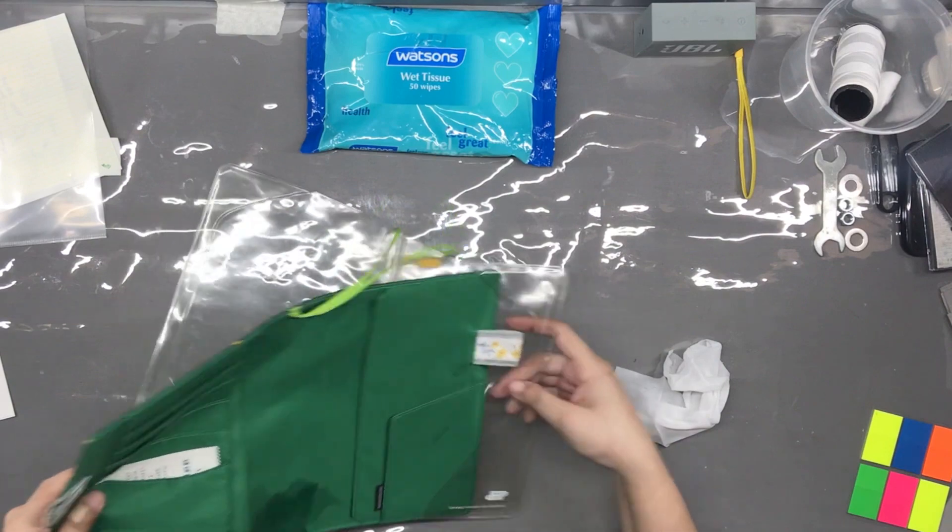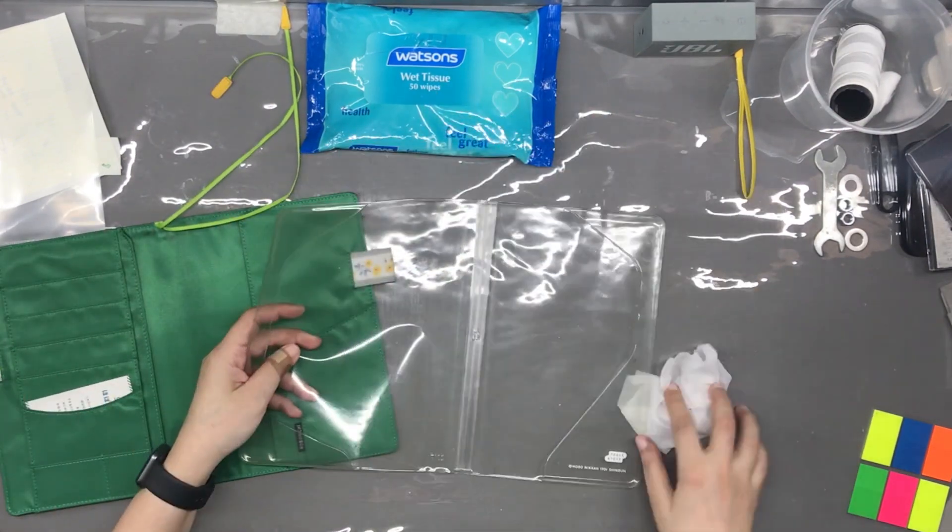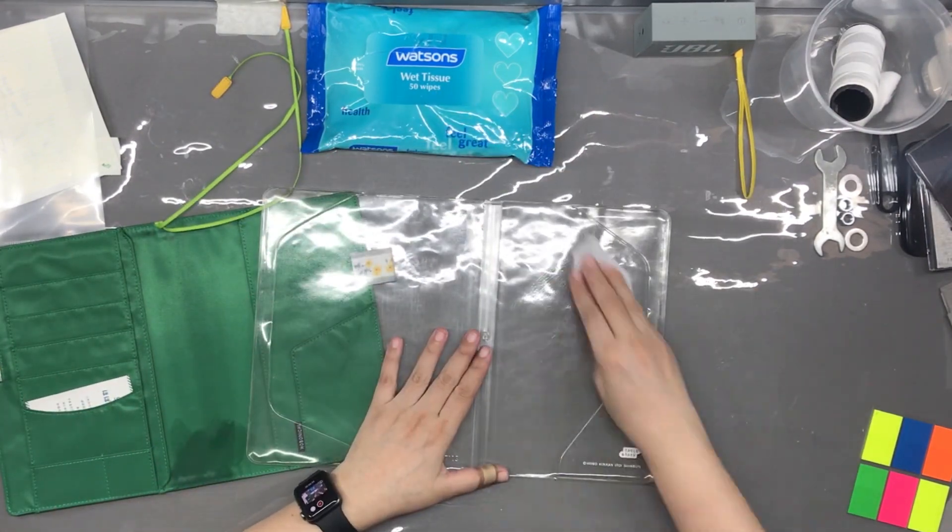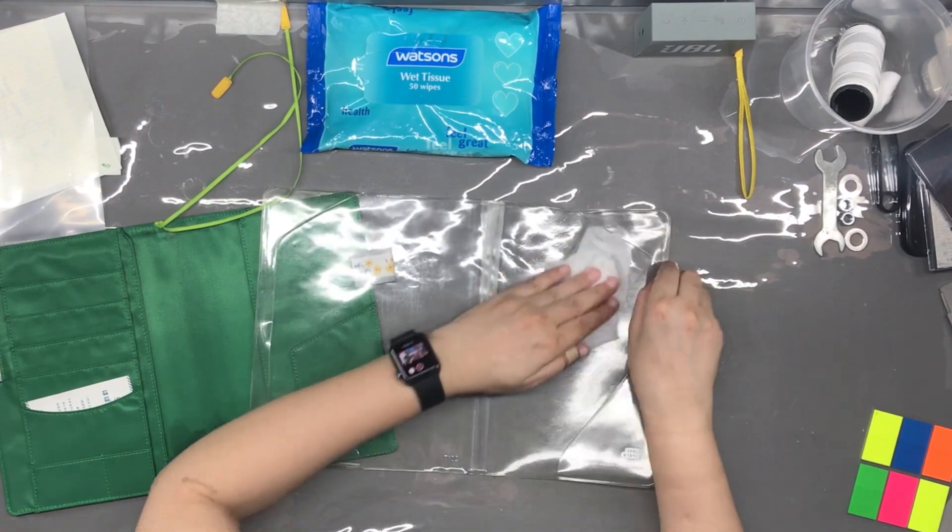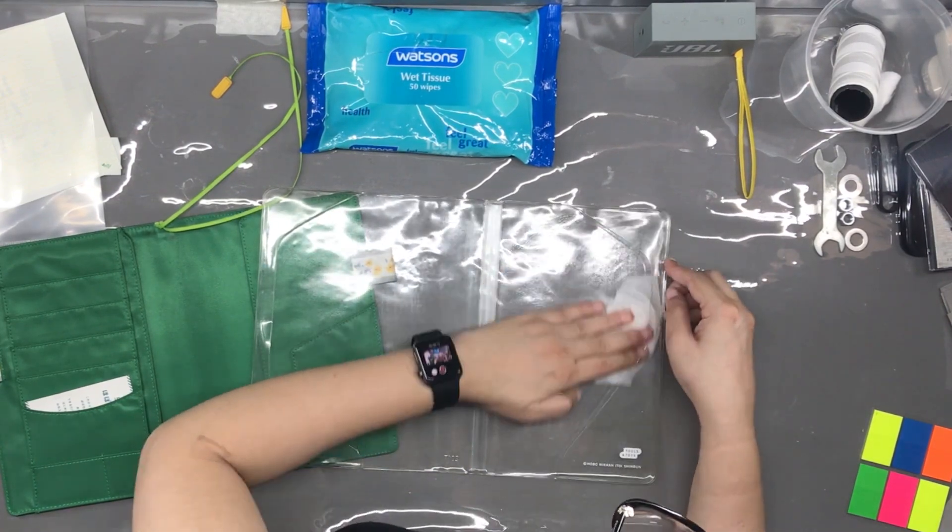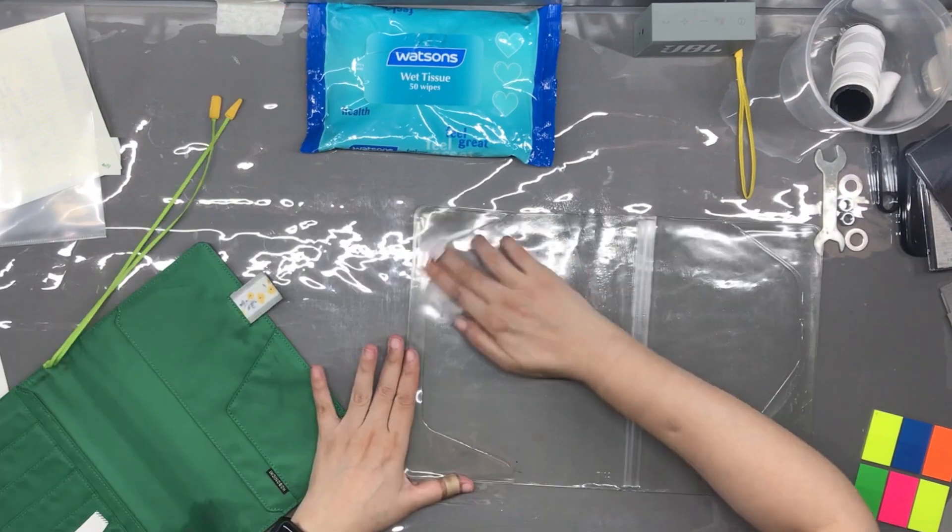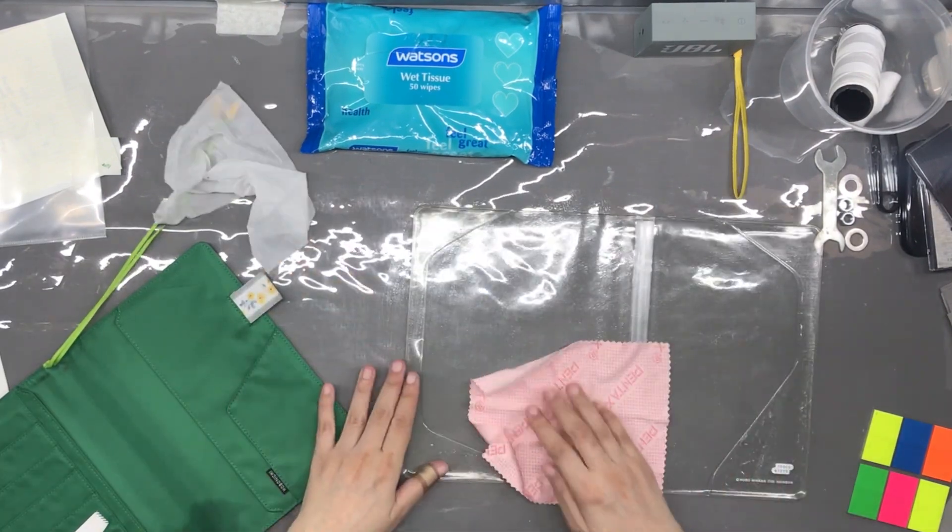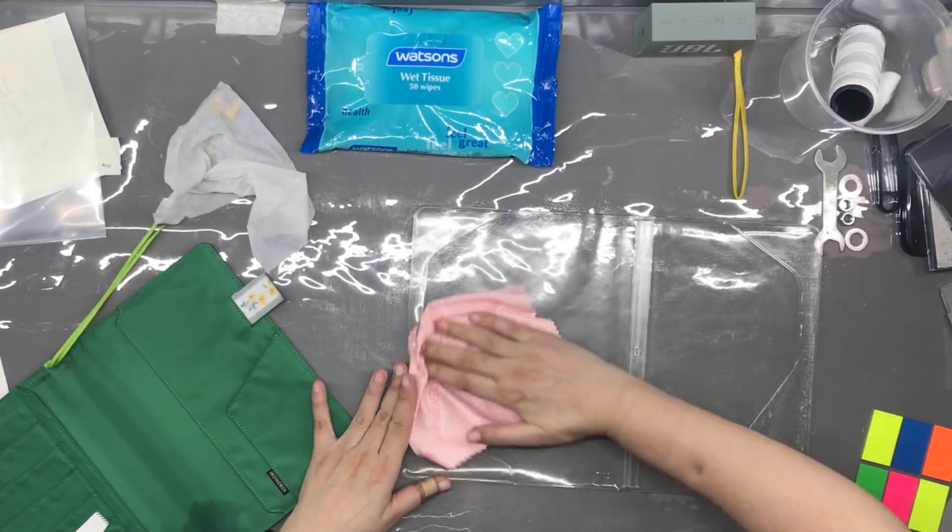So I got serious about cleaning. I took out the cover-on-cover and dealt with that one first. I used a wet wipe to wipe the entire plastic, all of the surfaces including the inside of the folds, and to wipe away the wetness I used this pink microfiber cloth.